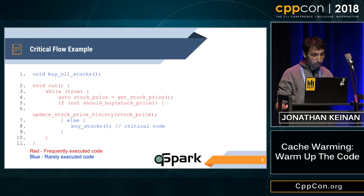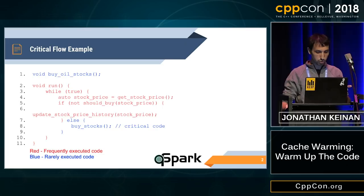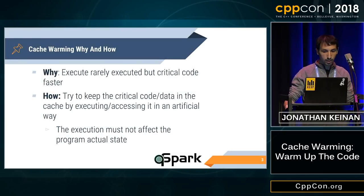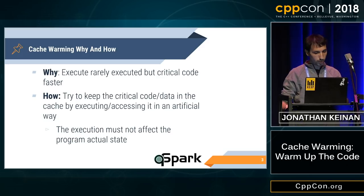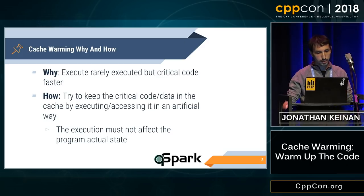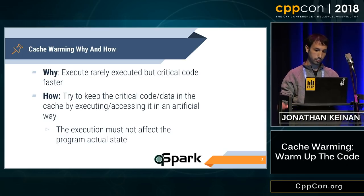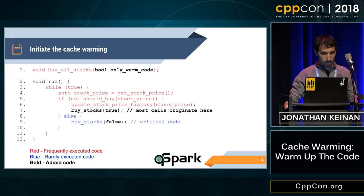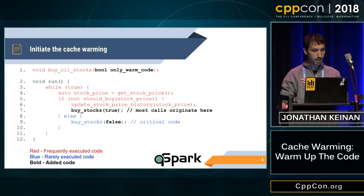To change that, we need to somehow execute buy stocks in an artificial way without actually buying stocks. In a more formal way, cache warming means trying to keep code and data near the cache by accessing the memory it is stored in an artificial way. So let's try to take the code from the previous example and try to warm buy stocks.